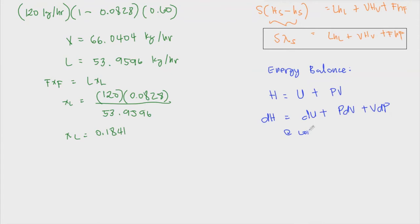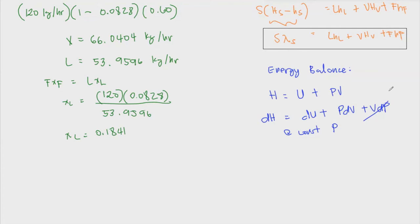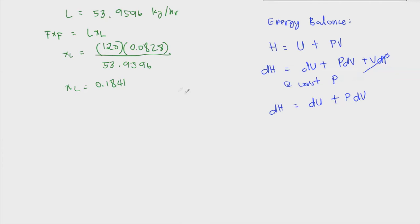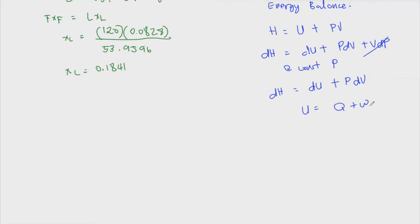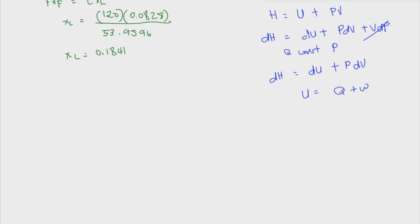In any evaporation process, we are always at constant pressure — in this case, 141 kilopascal. At constant pressure, dP equals zero, so the expression simplifies to dH equals dU plus P dV. From the first law of thermodynamics, dU equals dQ minus dW, and at constant pressure dW equals P dV.